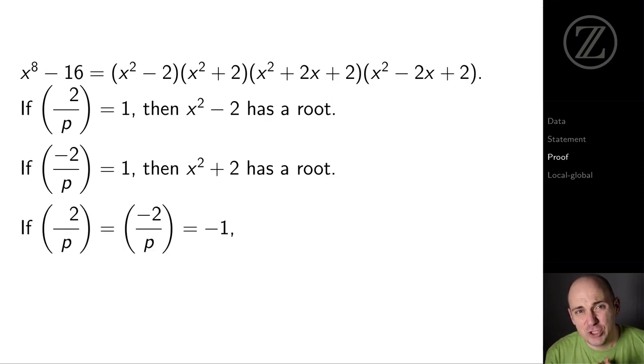If both of those things don't happen, if we're in a situation where (2/p) = -1 and (-2/p) = -1, what do we do? Well, in that case, (-1/p) = 1.